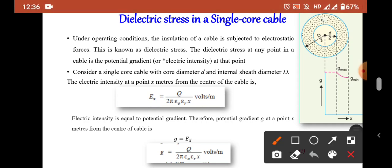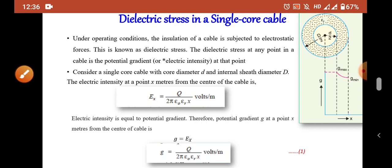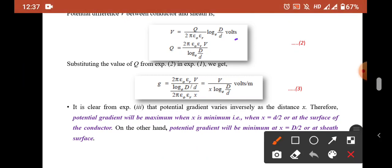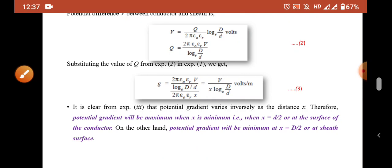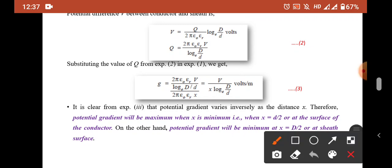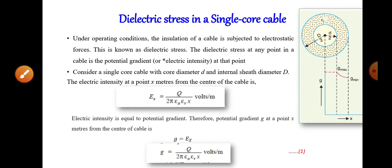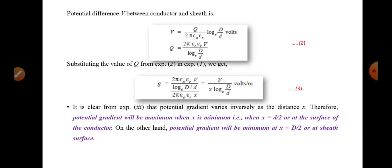In this equation we need to substitute for q. We know that the potential V between the conductor and sheath is: V = q / (2π·ε₀·εᵣ) · log_e(D/d) volts. This equation is obtained from the capacitance of a single core cable — please refer to that derivation. From this, q = 2π·ε₀·εᵣ·V / log_e(D/d). Substituting into the equation for G gives: G = V / (x · log_e(D/d)).